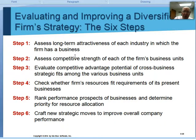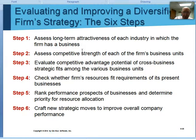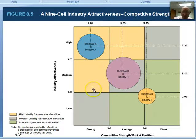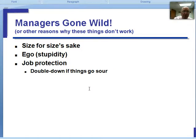We talked briefly about the idea of portfolio management. I drew on the board a chart in class about dogs, cows, and stars — that's something you're going to want to make sure you study your notes on that topic. And then to wrap it up, we talked about how managers often cause these things to go badly because their ego gets involved and they're trying to do good things for their job.